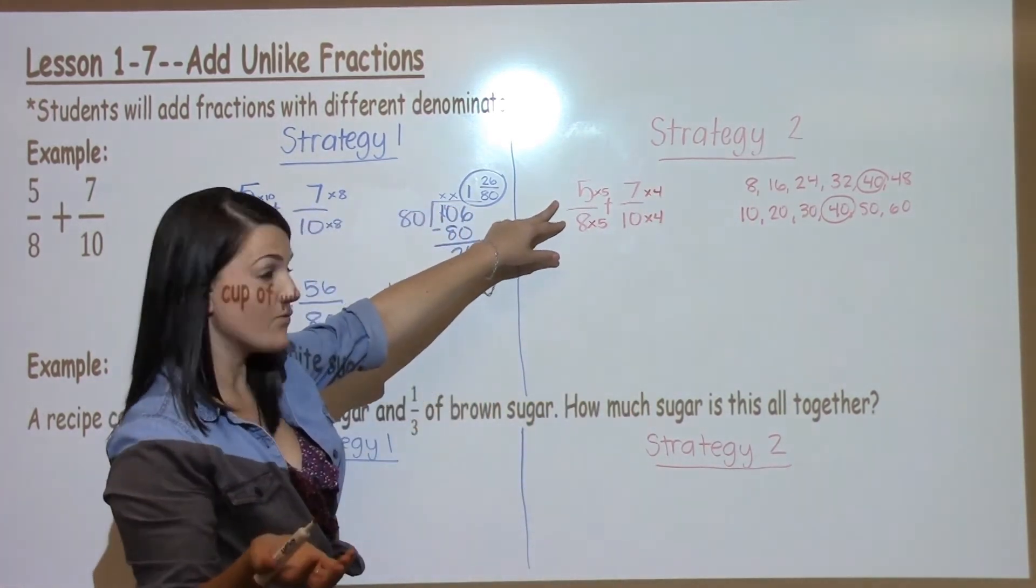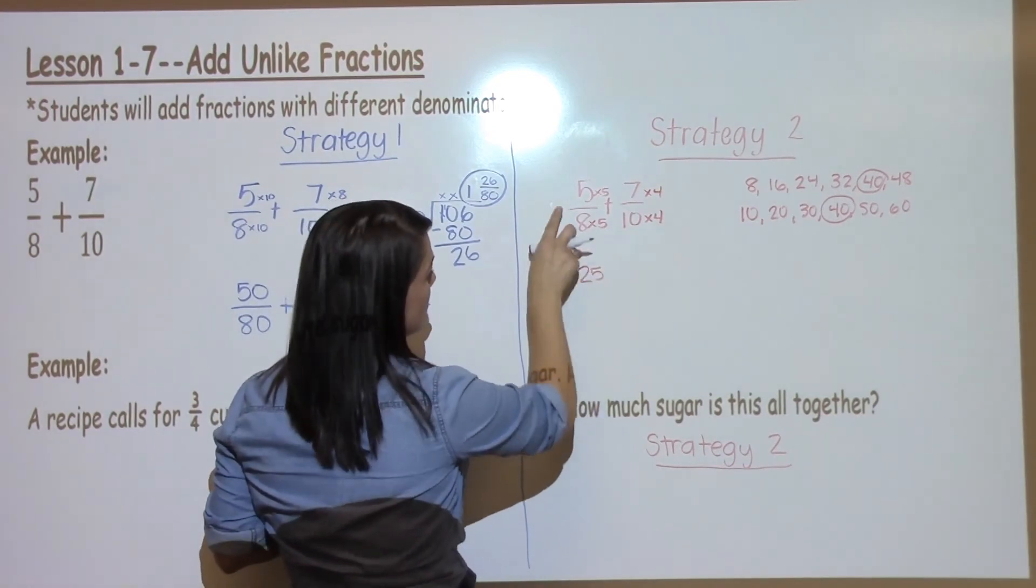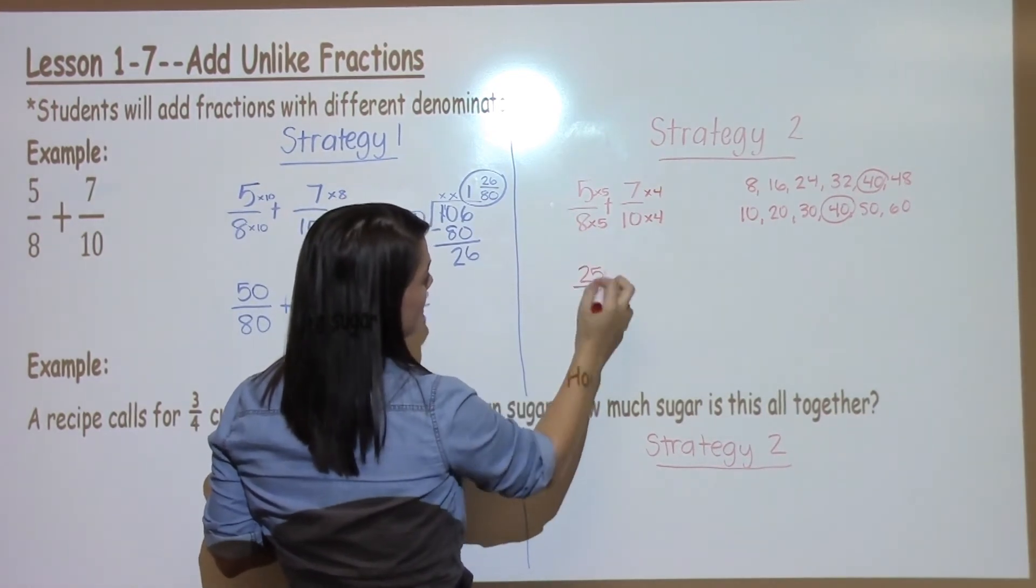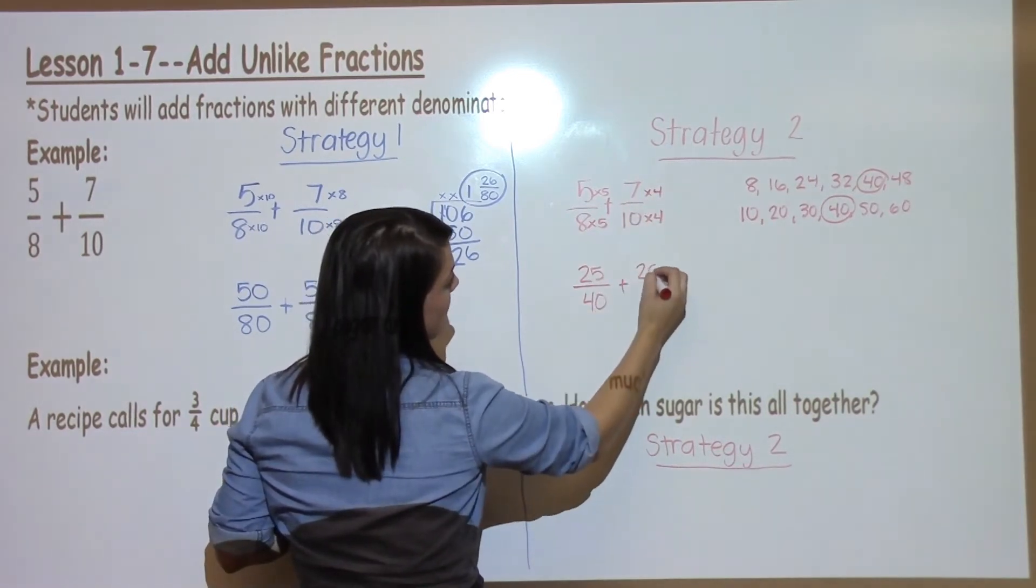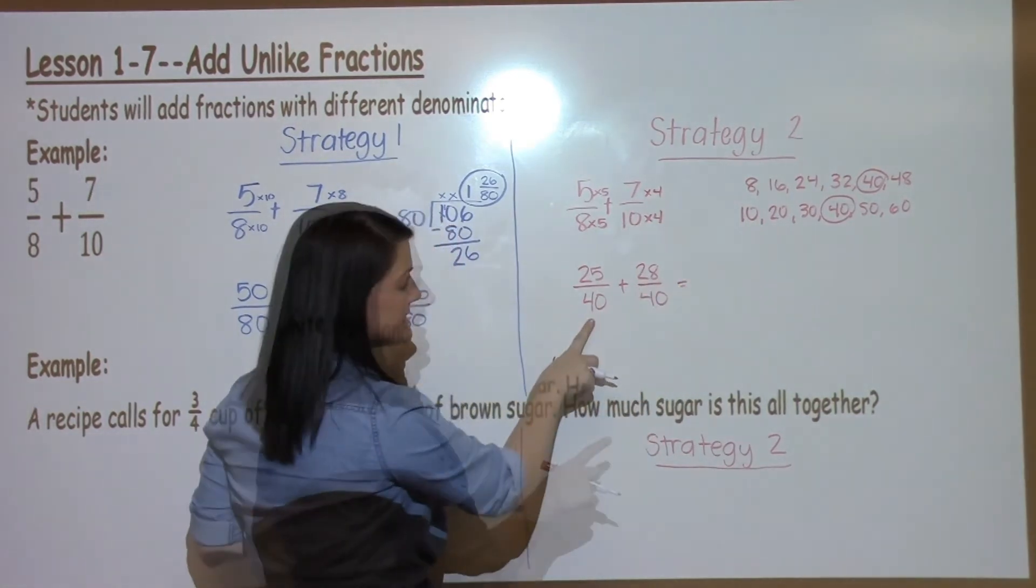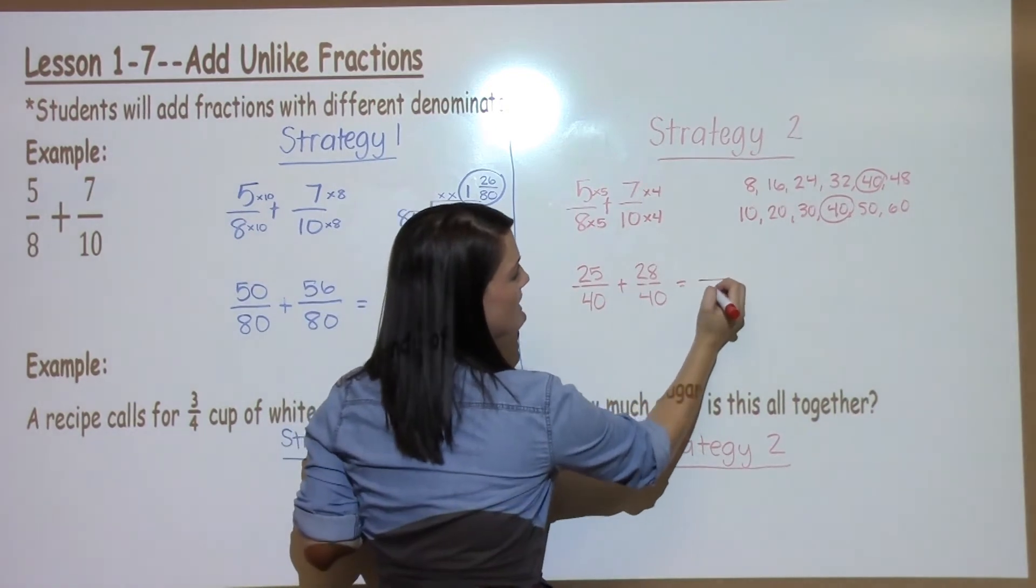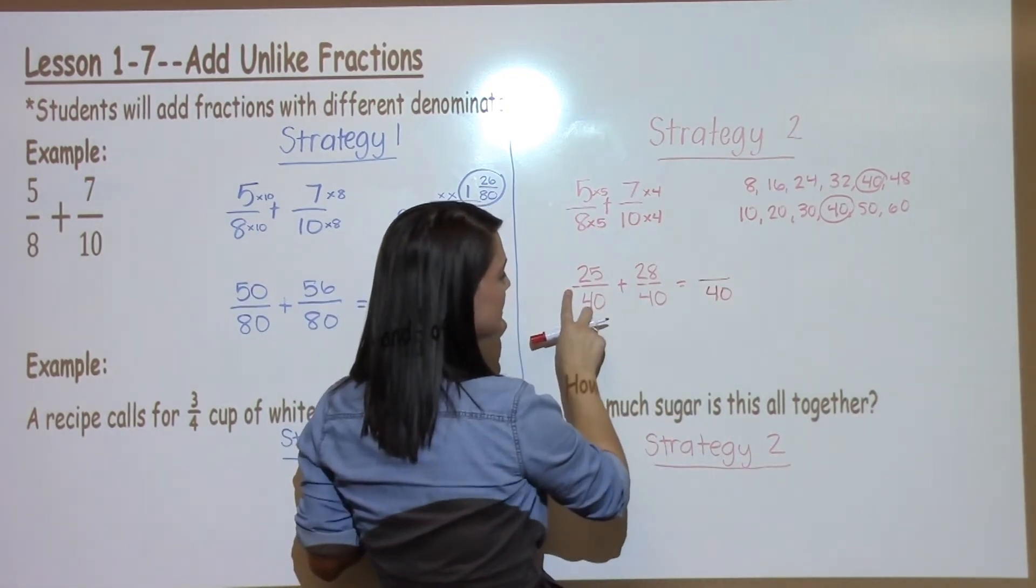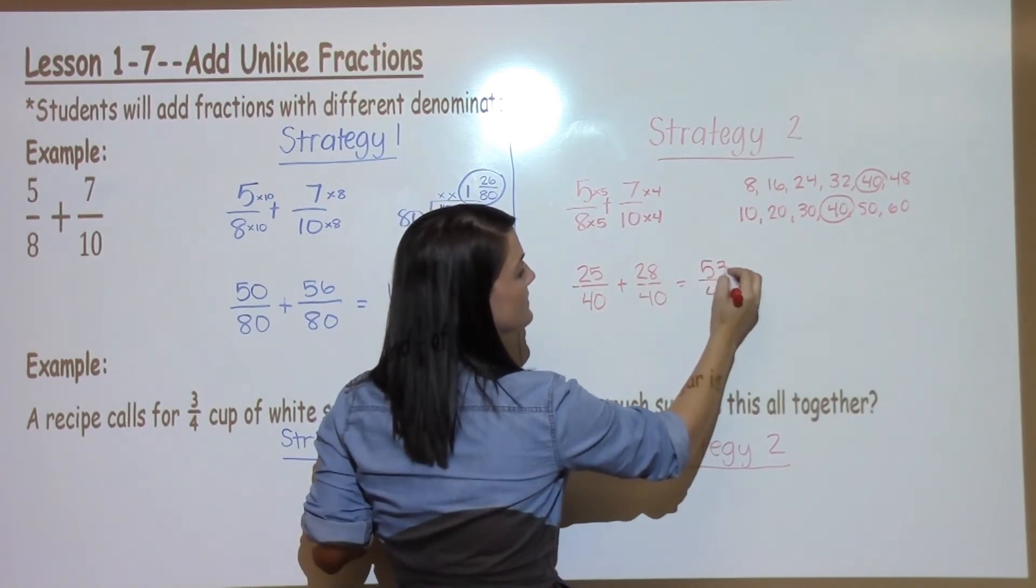I'm going to make two fractions that look a little bit different, but are still the same. 5 times 5 is 25, 8 times 5 is 40. Plus 7 times 4 is 28, 10 times 4 is 40. Now that I've made my denominators the same, they get to stay the same at 40, and then I just add my tops. 25 plus 28 is 53.